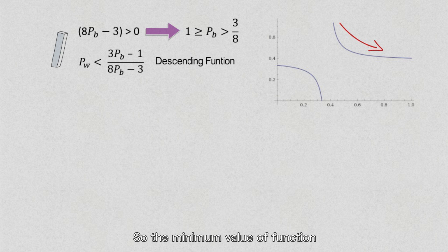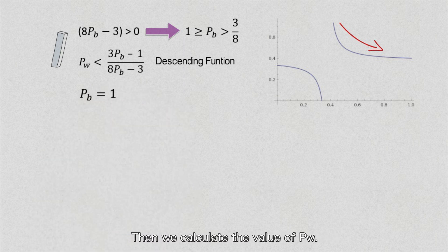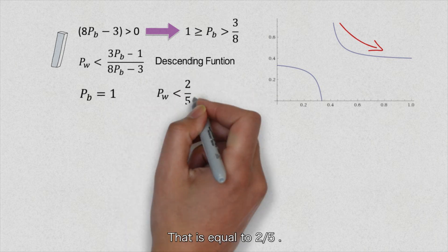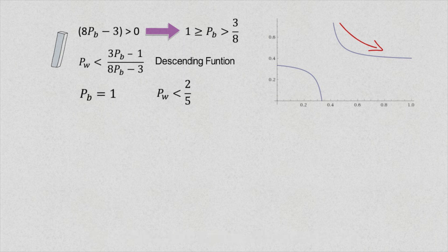So the minimum value of function 3P_b minus 1 over 8P_b minus 3 is when P_b equals 1. Then we calculate the value of P_w. That is equal to 2 over 5. In conclusion, when P_b is larger than 3 over 8, as long as P_w is less than 2 over 5, the beast is always losing money.